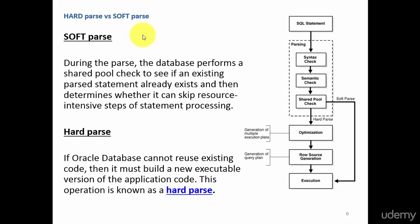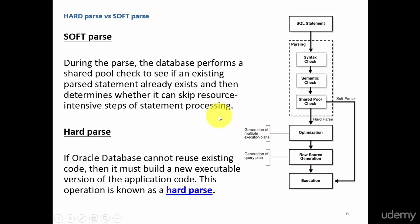Basically, it's very simple. If the statement is found in the shared pool and it avoids optimization and row source generation and directly goes to the execution stage, then that SQL statement went through a soft parse. But if that SQL statement was not found in the shared pool check and it had to do the optimization and row source generation, then that means it did a hard parse. That's the only difference.